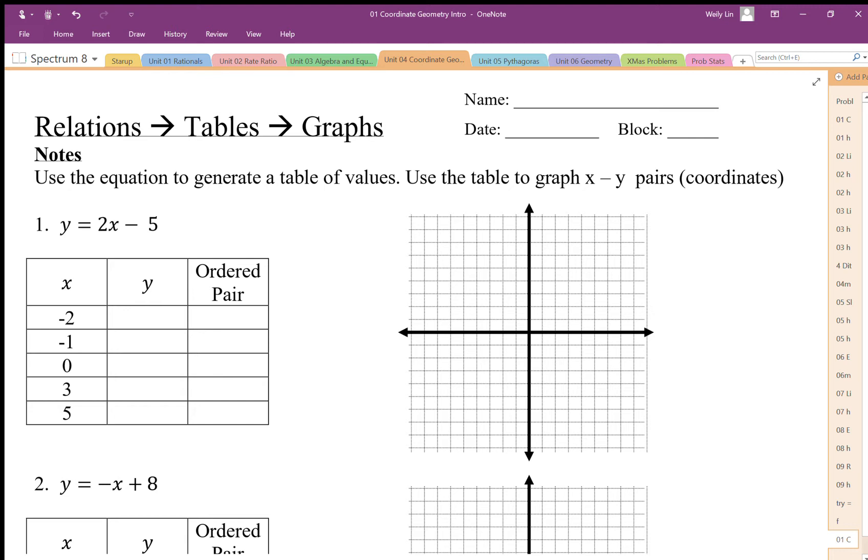Okay, so I'm just going to plug in here. So I'm going to put negative 2, I end up with negative 9, and we end up with the ordered pair negative 2, negative 9, and get a point down here. Negative 1 is going to give us negative 7. Zero is going to give us negative 5.